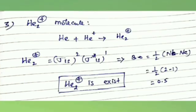Third one is the He2+ molecule. Helium combines with helium+. The electronic configuration of He2+ is: sigma 1s has 2 electrons (Nb = 2), sigma star 1s has 1 electron (Na = 1). Bond order = 1/2 × (2 − 1) = 0.5. Since bond order is fractional and positive, the molecule exists.